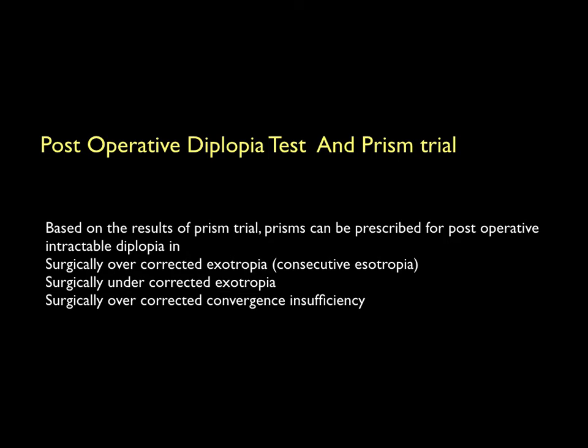Postoperatively, for intractable diplopia resulting from surgically over- or under-corrected squint, a prism trial can be done in clinic to neutralize the residual or overcorrected squint, and prisms can be prescribed later based on prism trial readings. We usually take more than 2 readings to confirm if the squint is stable.